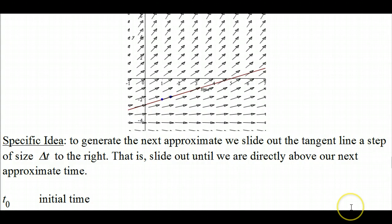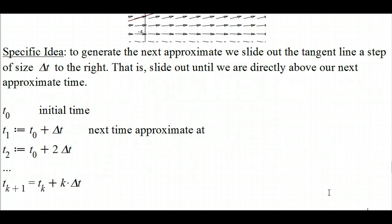That's the specific idea. At any point that you're at, you're going to slide out the tangent line a step of delta t, which in our case is 1 half to the right, until you're above or below your next approximate time. So you define your t values, your initial time, your next approximate, and so on.